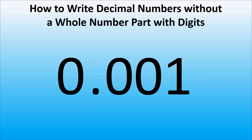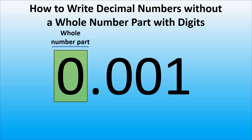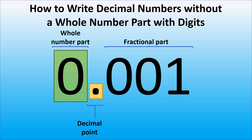Let's review what we know about decimal numbers. This is a whole number part, and it tells us the number of wholes. Here we have zero wholes. This is a decimal point, and it separates a whole number part from a fractional part.